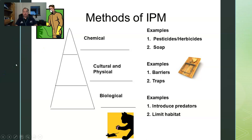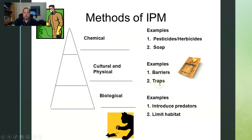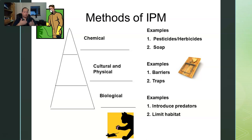Looking at the methods of IPM control: we've got biological controls, cultural and physical controls, and chemical controls. For biological controls we could introduce a predator or limit habitats. For cultural and physical controls we can put up barriers or traps. For chemical controls there are pesticides, herbicides, soaps. There's a pyramid here because there are a lot more biological controls and cultural/physical controls than chemical controls — and we should use those other controls much more than chemical controls, because that gives us a better chance to reduce problems to human health, beneficial organisms, and the environment.